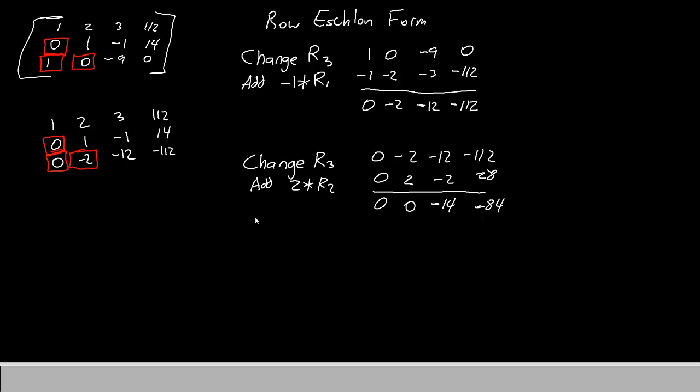Now remember, to reach row echelon form, we need to have a one in this position here. So we'll need to divide all the terms by negative 14. Zero divided by negative 14 is still zero. Negative 14 divided by negative 14 is the one that we wanted. And then negative 84 divided by negative 14 is just six. This will be our new row three. So here's our matrix. Row one still hasn't changed. Row two still hasn't changed. Row three is now zero, zero, one, six. This is our row reduced matrix. All that remains is to solve it.